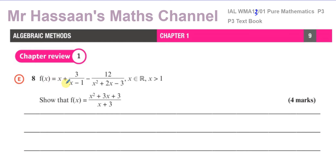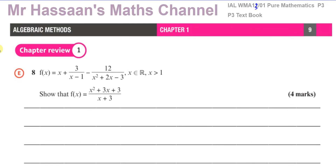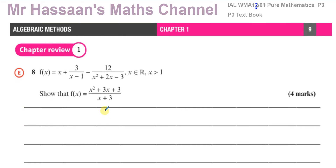So it says f(x) is equal to x plus three over x minus one, minus twelve over x squared plus two x minus three, where x is an element of the real numbers and x is greater than one. We've got to show that f(x) equals a single combined expression — this expression in three separate terms has to be combined into one.